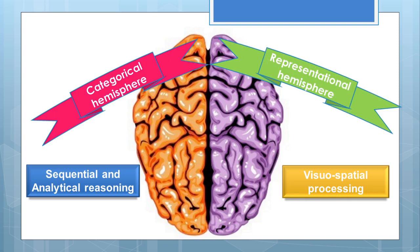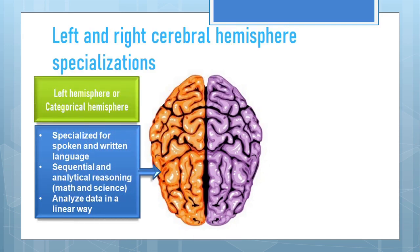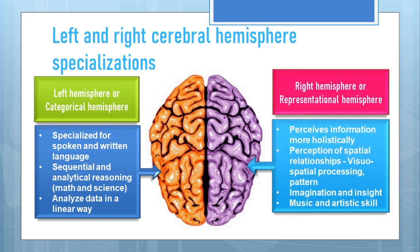Hence, the left hemisphere is called the categorical hemisphere and the right hemisphere is called the representational hemisphere. To summarize: the left or categorical hemisphere is specialized for spoken and written language, sequential and analytical reasoning involving maths and science, and analyzing data in a linear way. The right or representational hemisphere perceives information more holistically, in a complete state manner — including perception of spatial-visual relationships, analysis of complex patterns, imagination and insight, and music and artistic skills.